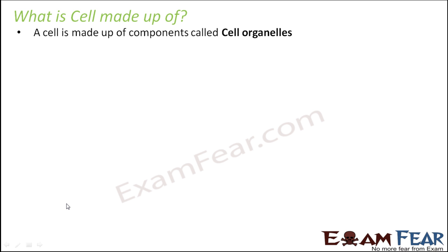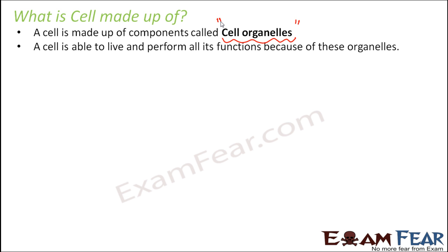A cell is made up of components called cell organelles. Inside the cell we have different types of components, and each of these components has a very specific role to perform. So each component is called a cell organelle. We will not discuss all the cell organelles here — some will be discussed in higher classes — but the important ones we will talk about. A cell is able to live and perform all its functions because of these organelles, each performing one specific function.